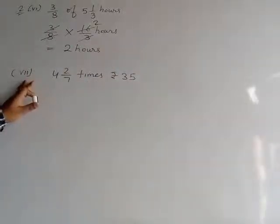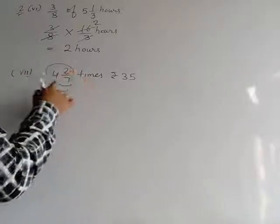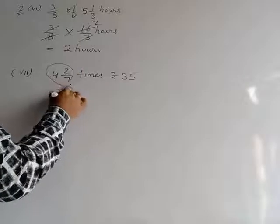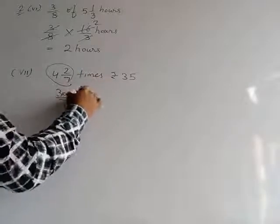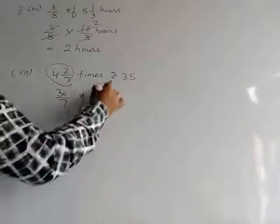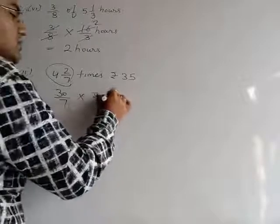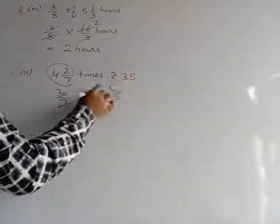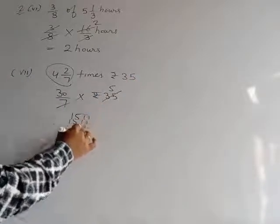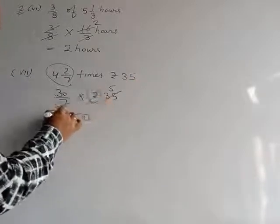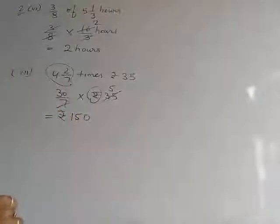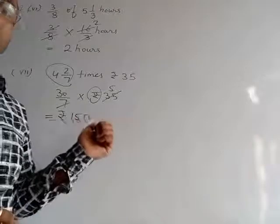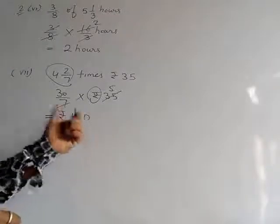Now see part number 7. First we convert the mixed fraction: 4×7=28, 28+2=30, so it becomes 30/7. Times means multiply by rupees 35. 7 and 35: 35÷7=5, so they cancel to 5. On multiplying: 30×5 = 150. The unit is rupees, so we must put the unit in the answer. The final answer is rupees 150.